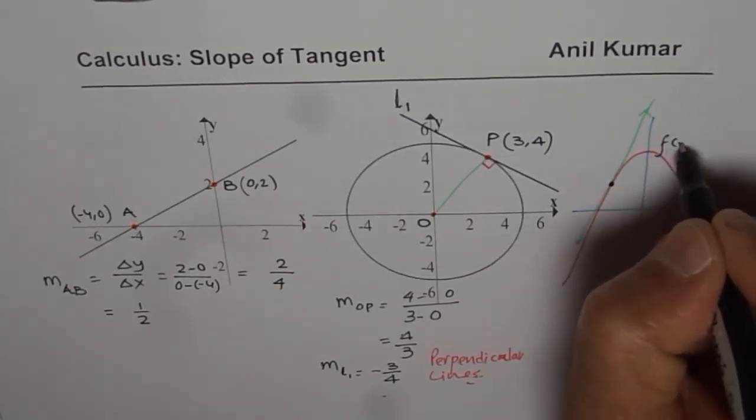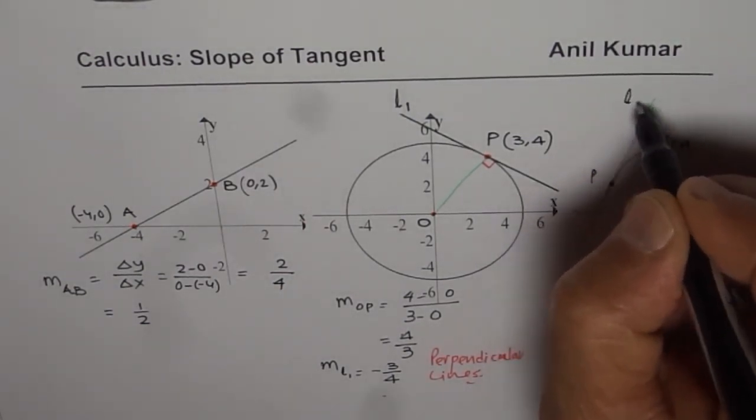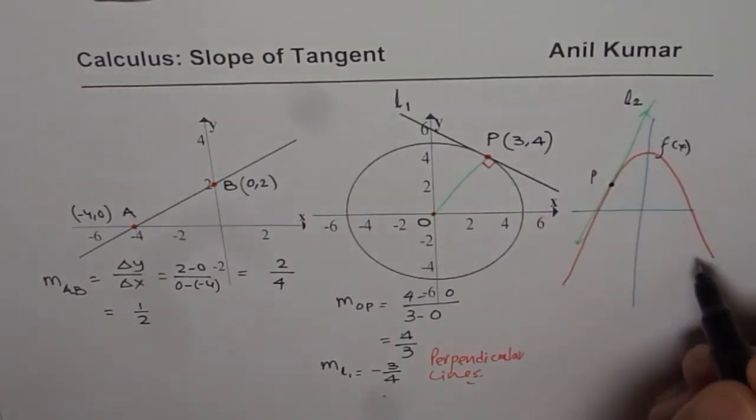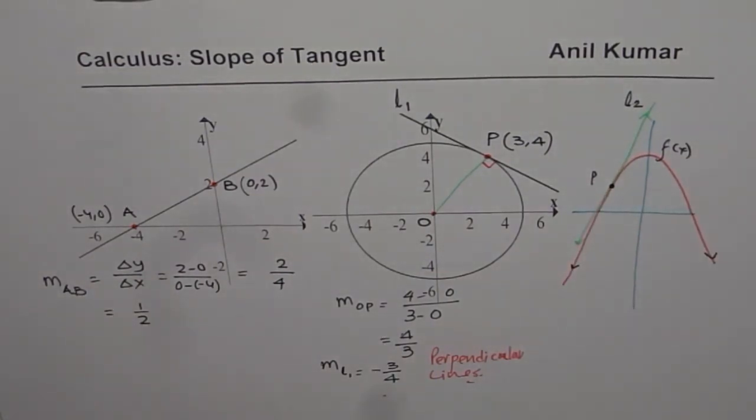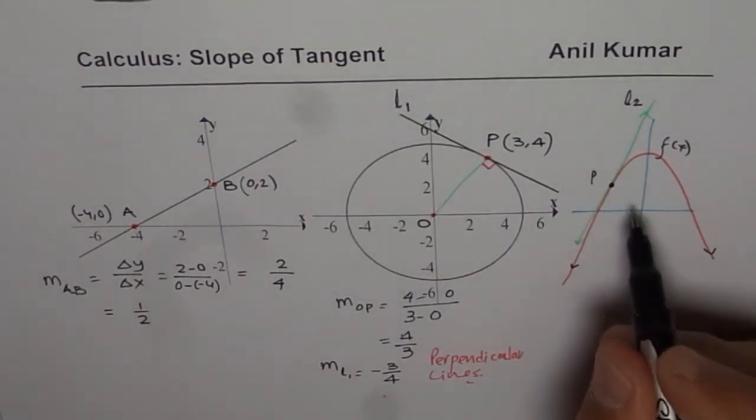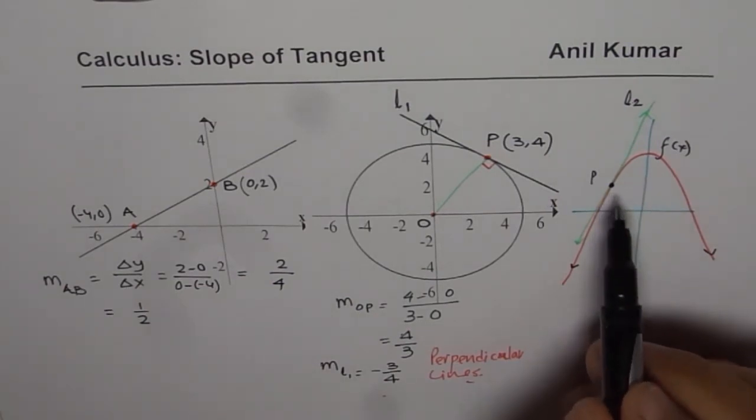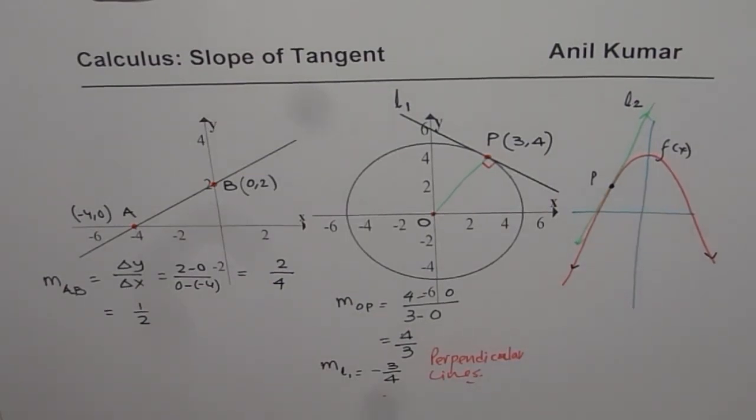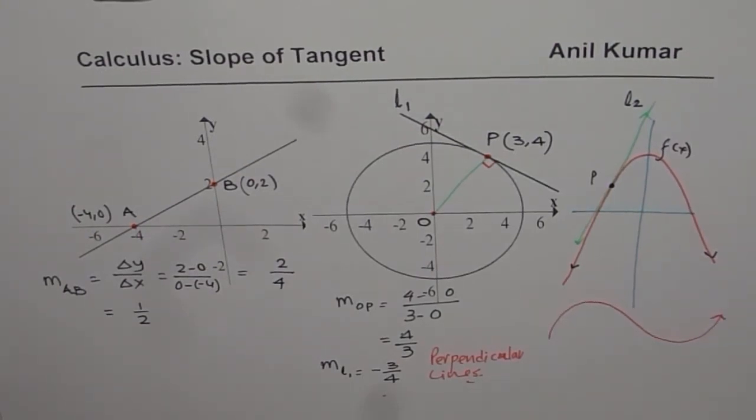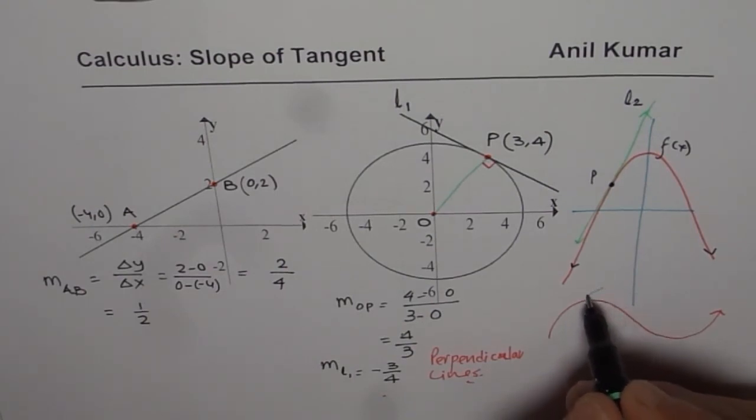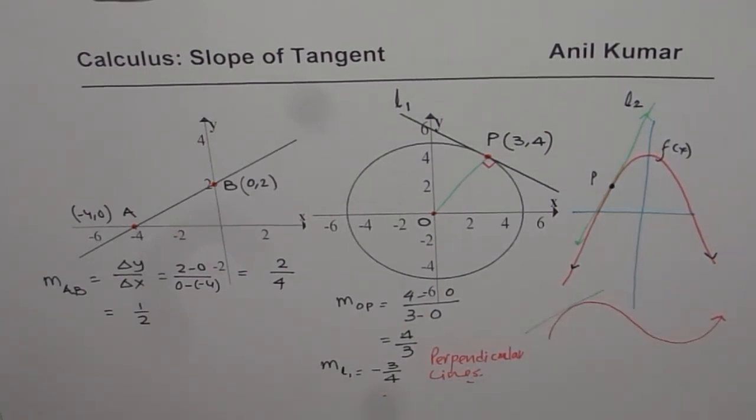So this is the function f of x and you need to find slope of the line L2 which is tangent to the curve f of x at a point B. Now that becomes extremely difficult. In calculus, we will try to solve such questions. Now the curves could be different kinds. So it could be a curve like this where you need to find tangent at any point. How will you find tangent at any point on the curve is what we are going to discuss in calculus.